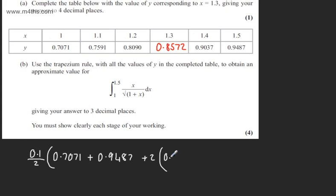So we'll have 0.7591, plus 0.8090, plus 0.8572, plus 0.9037.